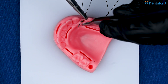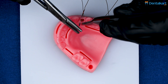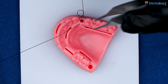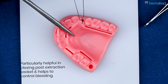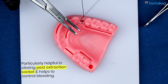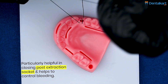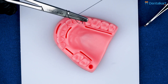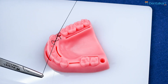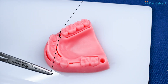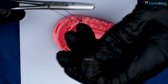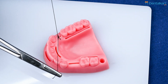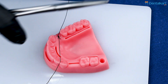In dentistry, this suture is particularly helpful for closing extraction sockets, and particularly after the removal of molars. It achieves good wound edge approximation and helps to control bleeding post-operatively, as well as reduces the occurrence of complications like dry socket. And if done properly, it can allow us to achieve good tension distribution across the wound.